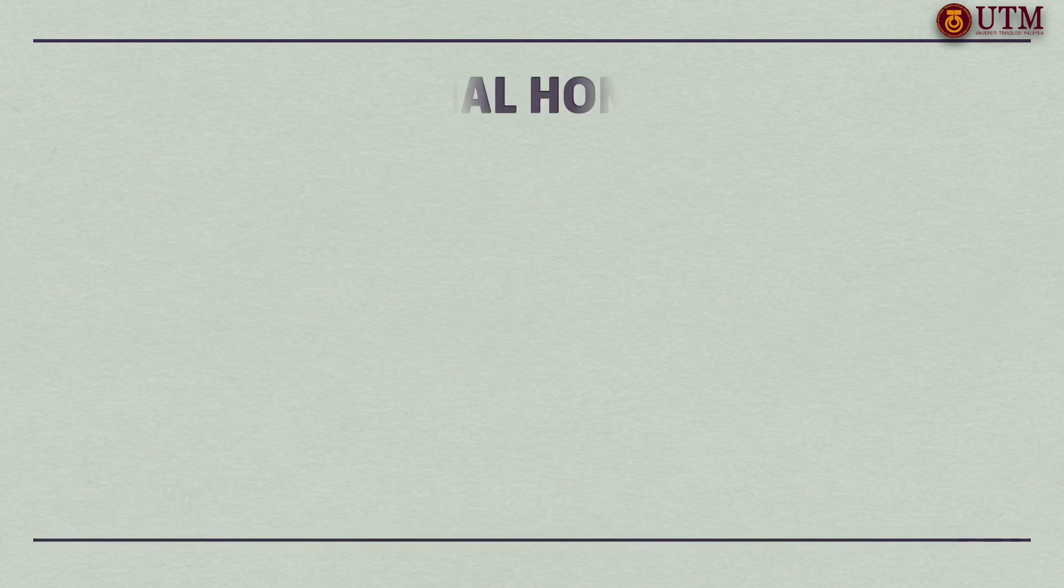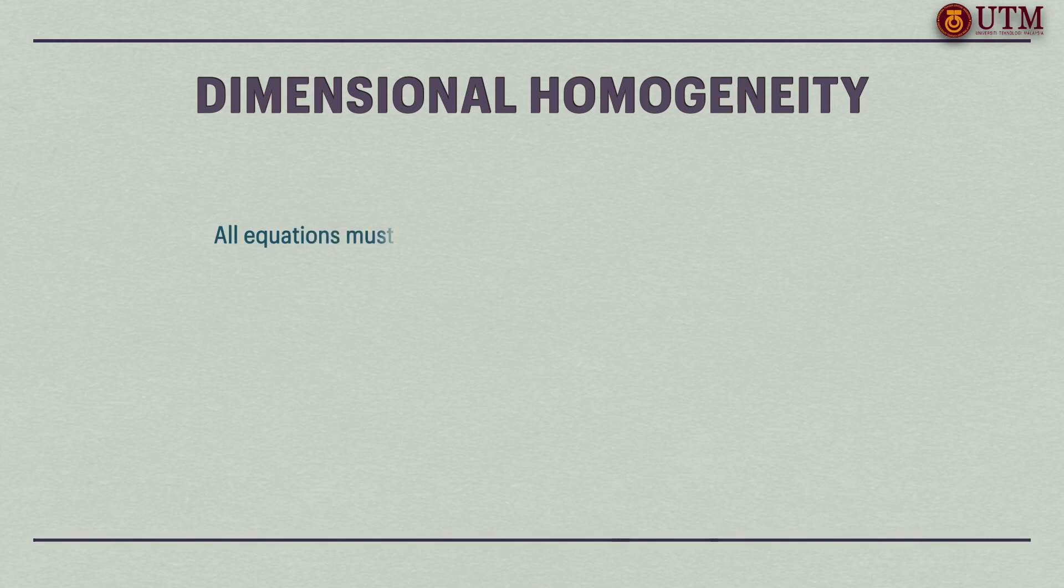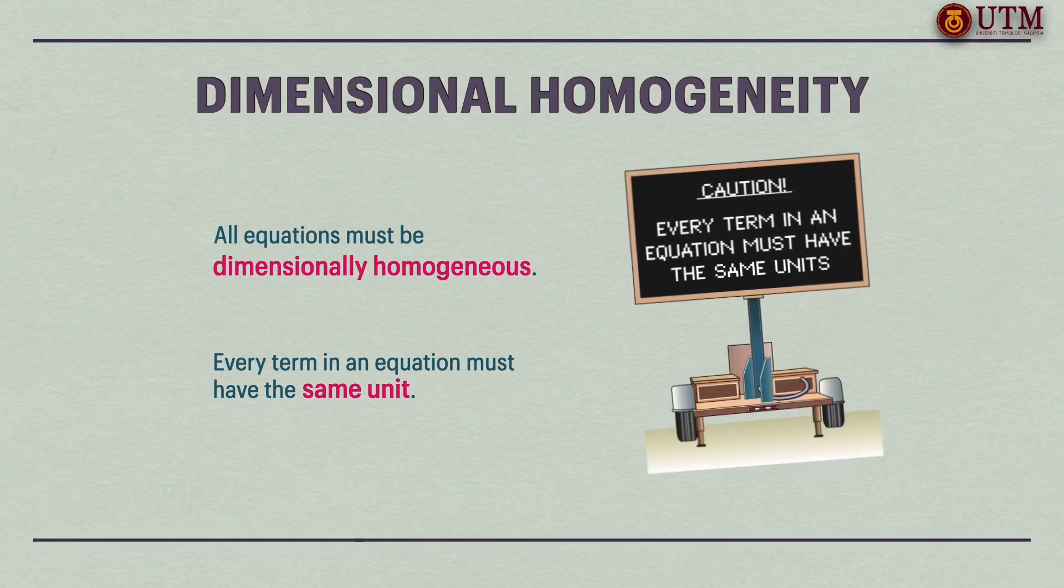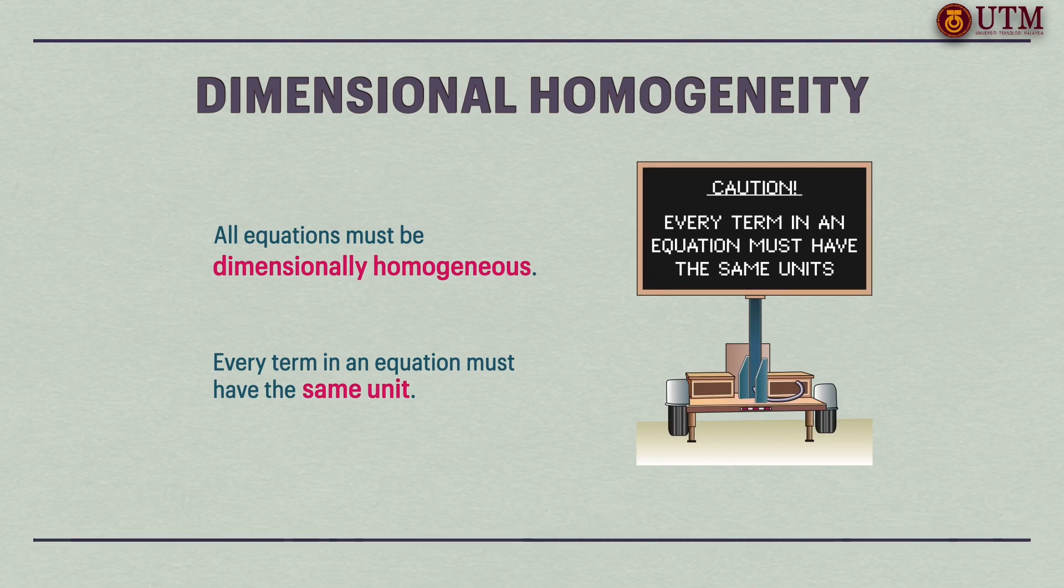We all know that apples and oranges do not add. In engineering, all equations must be dimensionally homogeneous. That is, every term in an equation must have the same unit. If, at some stage of an analysis, we find ourselves in a position to add two quantities that have different units, it is a clear indication that we have made an error at an early stage.